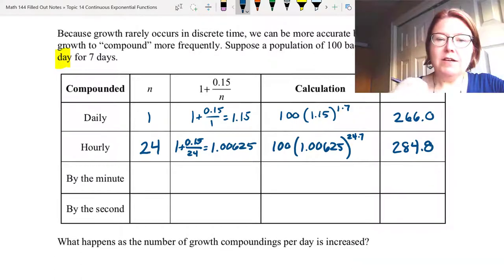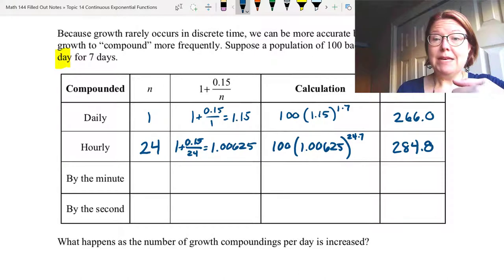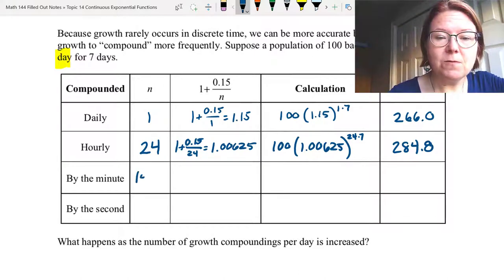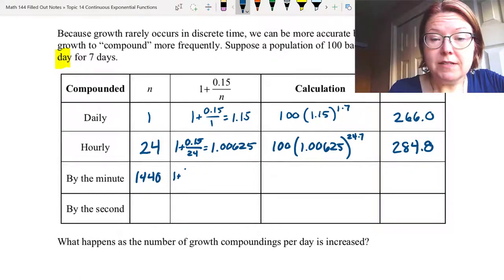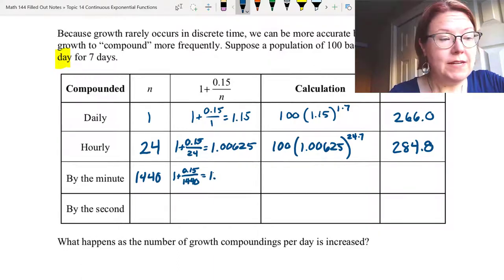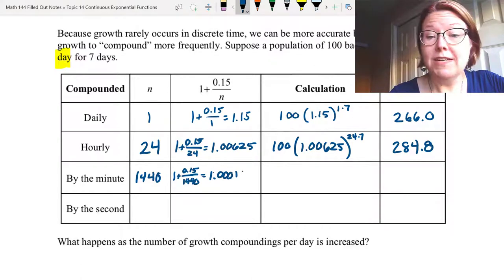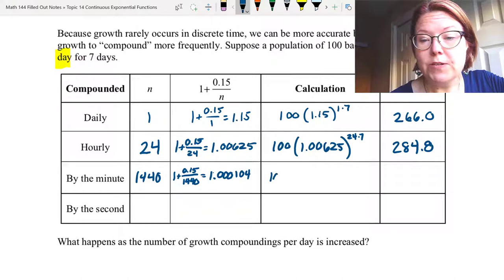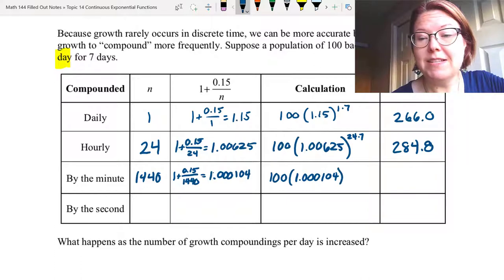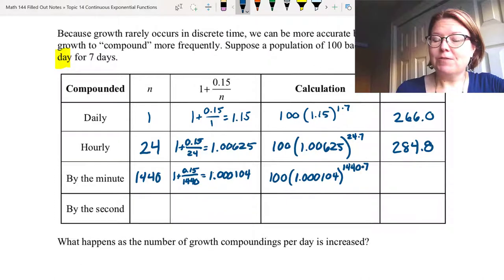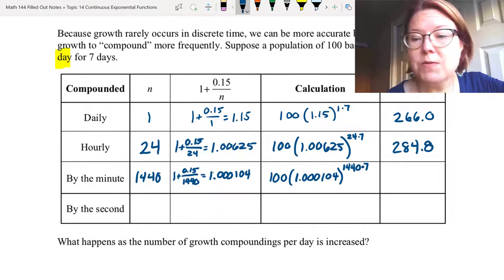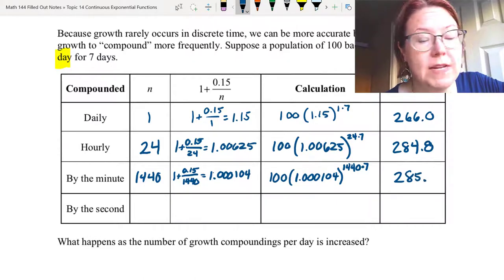Compounding by the minute: we do 24 hours a day times 60 minutes in an hour, which gives us 1,440 compoundings per day. Our growth factor would be 1 + 0.15/1440, which gives 1.000104. Our calculation would be 100 times (1.000104) to the 1440 times 7 power. Again, there's 1440 compoundings times seven days. This results in 285.3 bacteria.